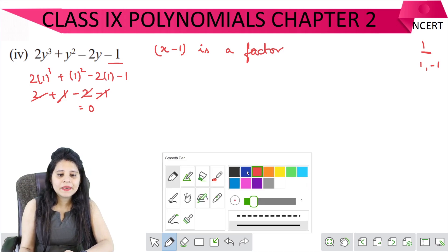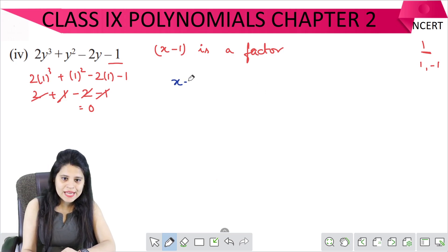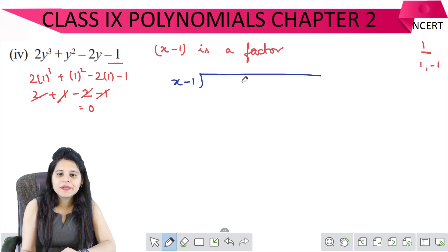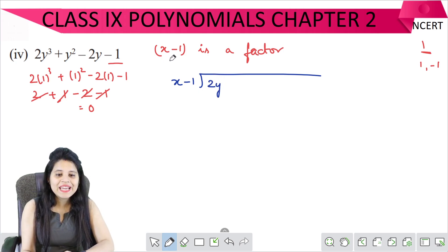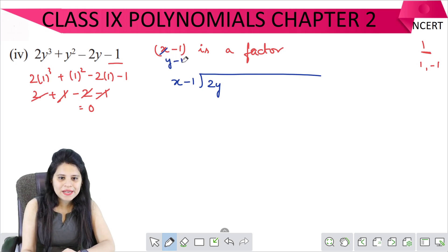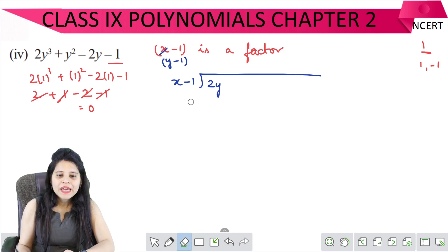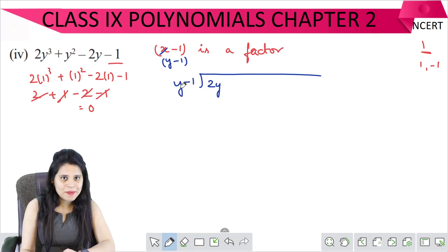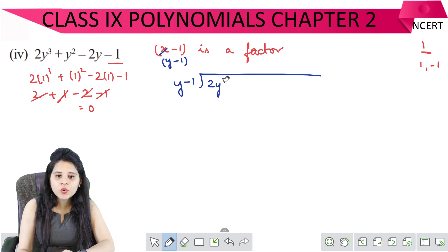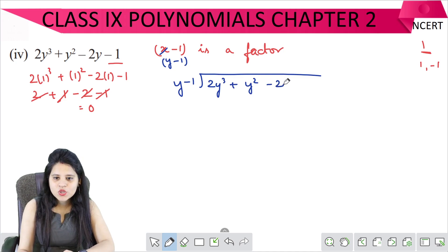So now we will do our division. So x minus 1 — we will divide. This is y, so we will divide by y minus 1. This is the y minus 1 factor, and here we will add x minus 1. This is y minus 1. So this is 2y cubed plus y squared minus 2y minus 1.